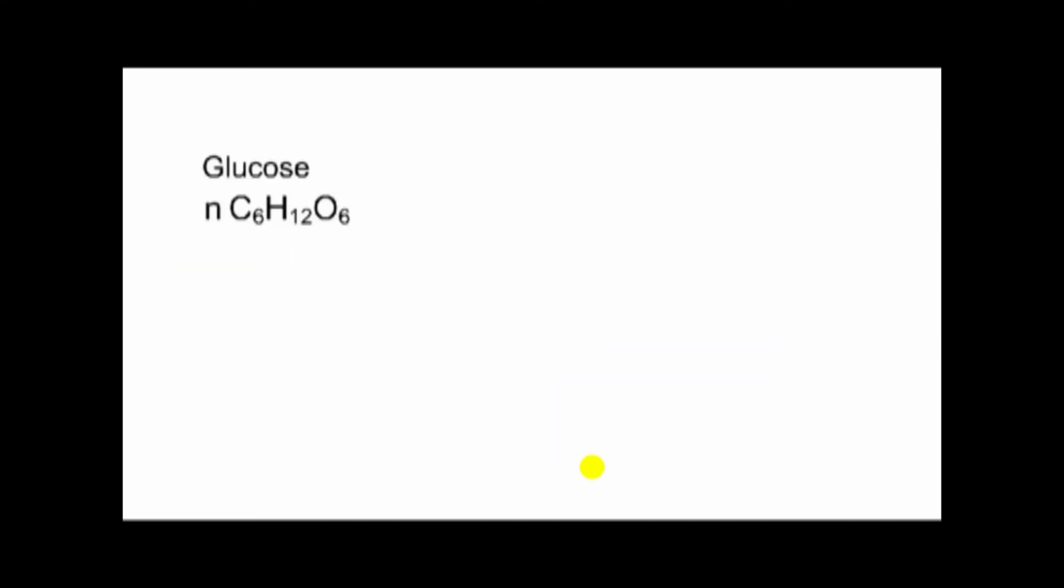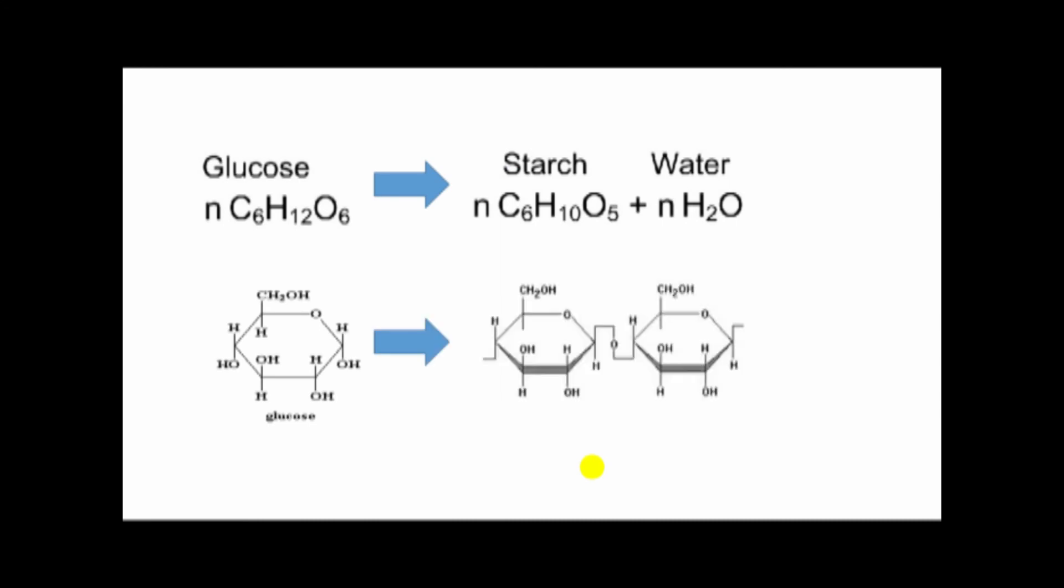From glucose, starch is produced. Glucose is the monomer, starch is the polymer. The link is here on both sides. This is actually a natural polymer.